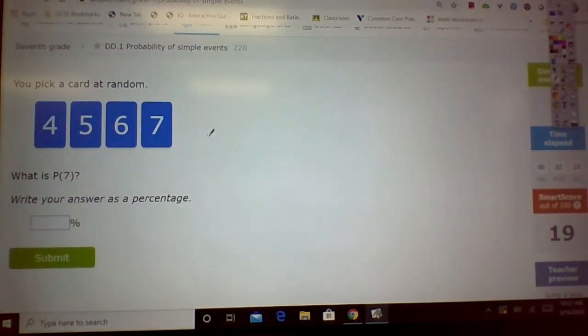Let's look here. You pick a random card. How many cards are there all together? We have one, two, three, four. So four goes on the bottom. How many of those are a seven? Because you're looking for the probability of it being a seven? One. So your answer is one-fourth. But the question says, write your answer as a percent.